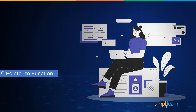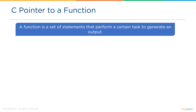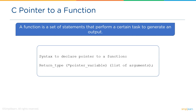Now that we know pointer to array in C, let's move ahead and understand pointer to function in C. As we all know, a function is a set of statements that perform a certain task to generate an output. The syntax to declare a pointer to a function is: return type, pointer variable, followed by list of arguments. To understand a little more about pointers to functions, let's run a program.